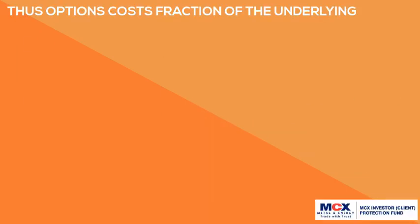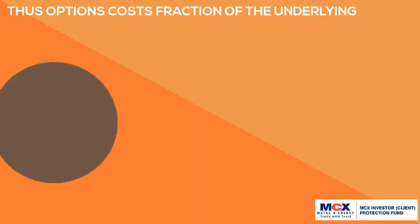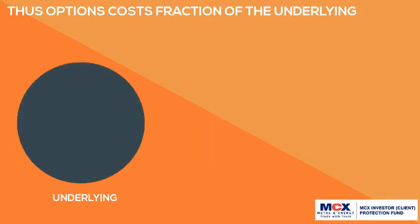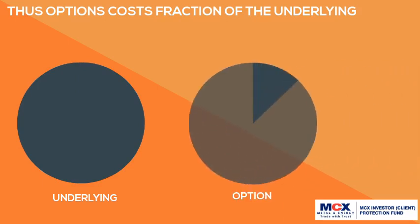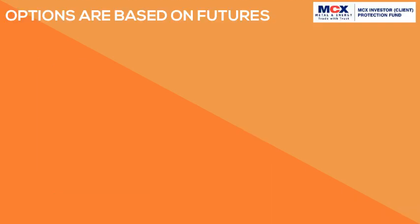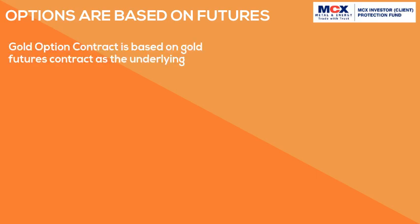So the natural question is why are options so popular today? Options are popular as they cost only a fraction of the value of the underlying — the options premium is only a smaller piece of the bigger pie. In Indian commodity markets, options are based on futures. For example, the gold options contract is based on gold futures as the underlying.